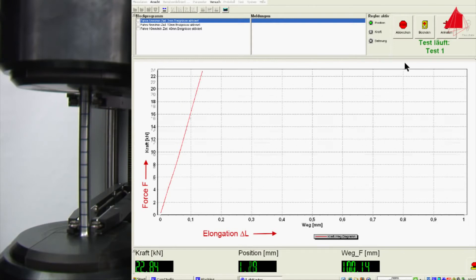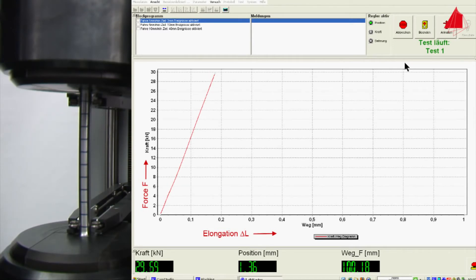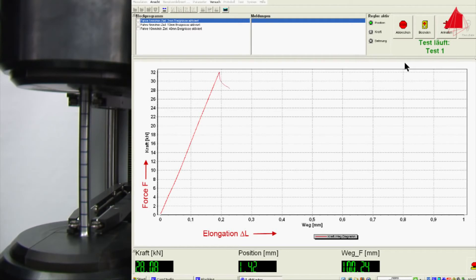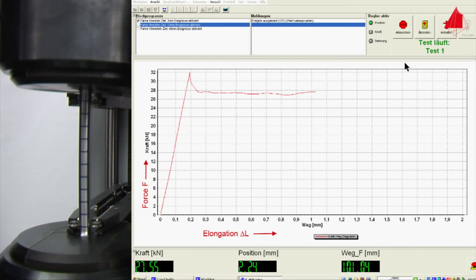In materials with yield point phenomenon, the end of the elastic area can be seen clearly. The plastic deformation starts abruptly and is accompanied by a sudden drop of force. If the test piece were to be unloaded now, it would not spring back to the original length, but instead show a permanent elongation.